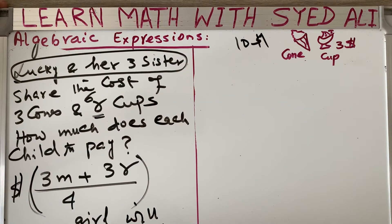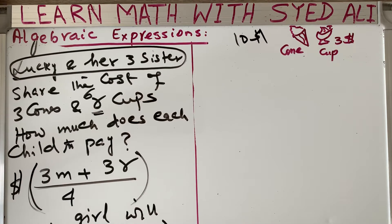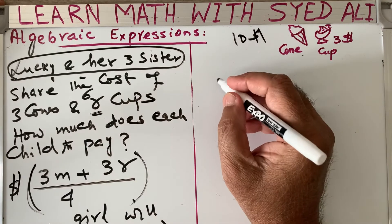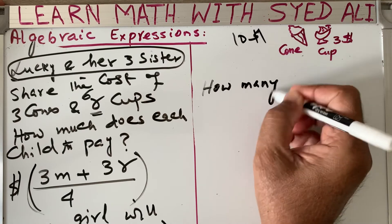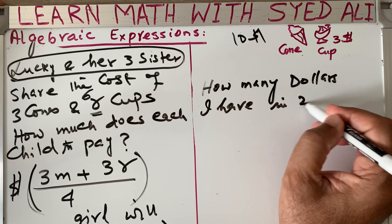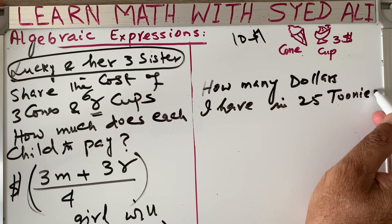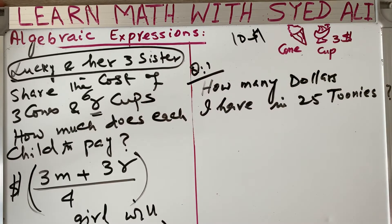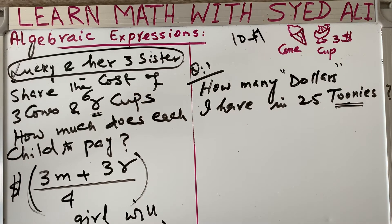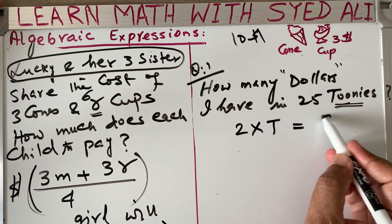A student asked about the last video on loonies and toonies — how to decide whether to divide or multiply. For example: how many dollars do I have in 25 toonies? Students should read the question carefully. Since a toonie is two dollars, to find the dollars you multiply: the algebraic expression is 2 times t equals dollars.